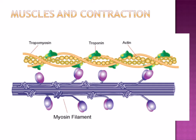ATP is involved in this process. When ATP is hydrolyzed, the myosin head detaches from the actin filament. Contraction occurs when the myosin head attaches to the actin, bends, and moves the actin and myosin filaments over each other.